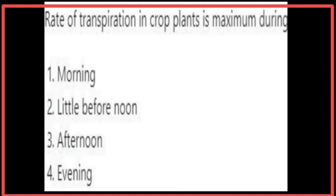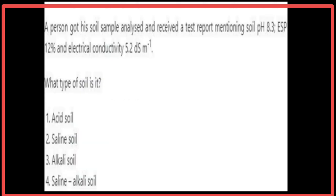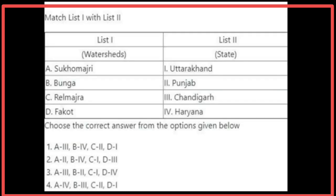The rate of transpiration in crop plants is maximum a little before noon. A soil sample with pH 8.3, exchangeable sodium percentage of 12%, and electrical conductivity of 5.2 dS/m is classified as a saline soil.